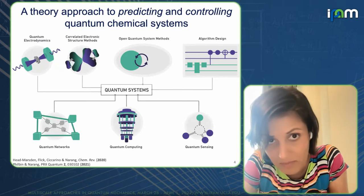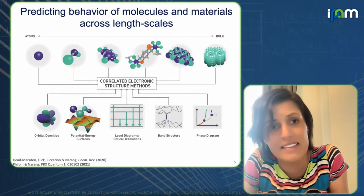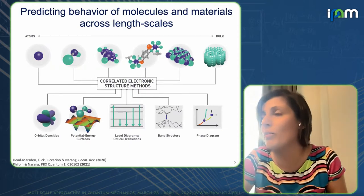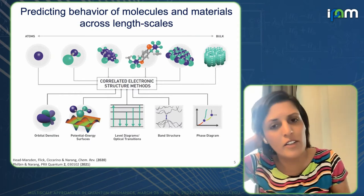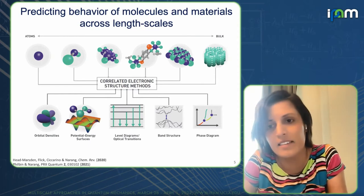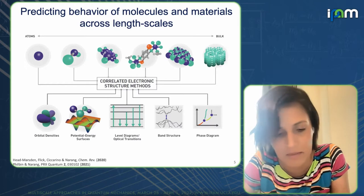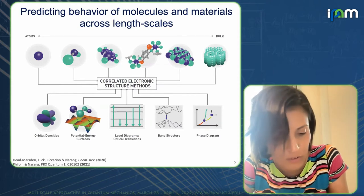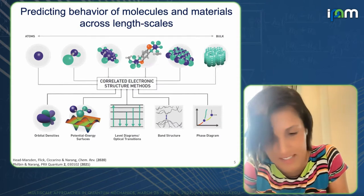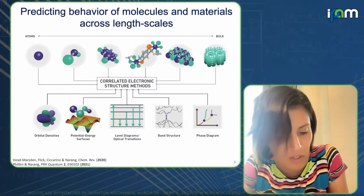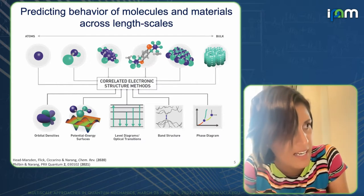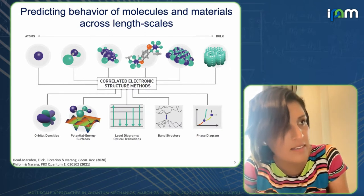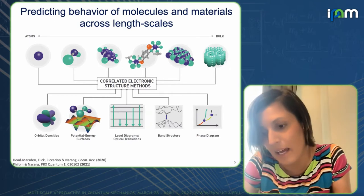A question I get frequently is: how are you merging across these methods — is there a single method that you use? The obvious answer is no. We think about how we can take the best of both quantum chemistry and condensed matter approaches to describe various systems. Many of you have seen various versions of this slide before, and I want to dive into two examples where there is both the need for combining across quantum chemistry and condensed matter approaches, and also where it sometimes poses challenges.